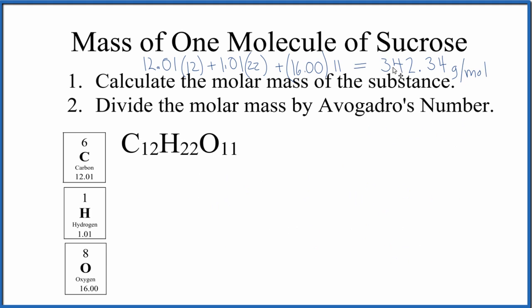So now all we're going to do is divide this 342.34 grams per mole, molar mass of sucrose, by Avogadro's number. Let's use a conversion factor, though, just to keep our units straight. We'll get the same answer either way.